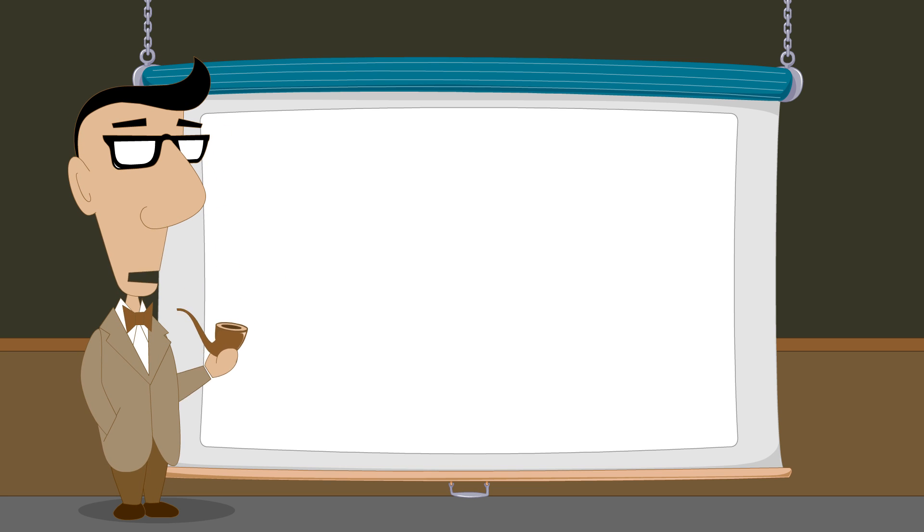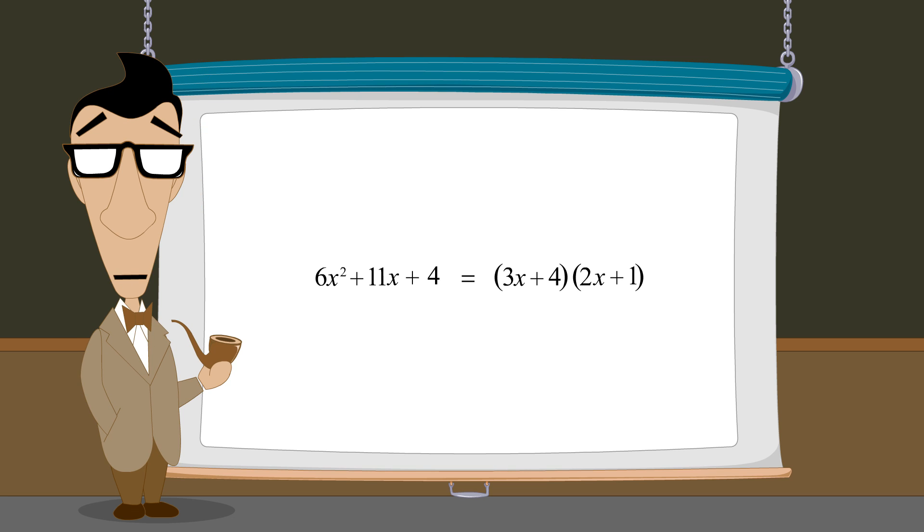In the next lecture, we will see how a quadratic expression can be created by multiplying two linear expressions together. And we will see how this multiplication is performed using what is called the FOIL method.